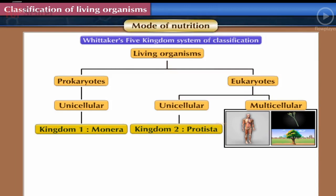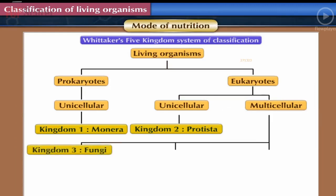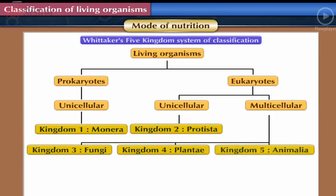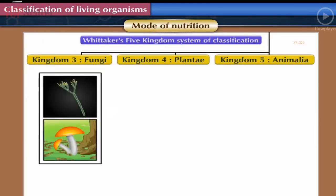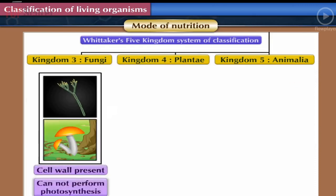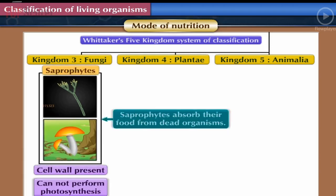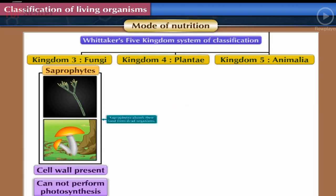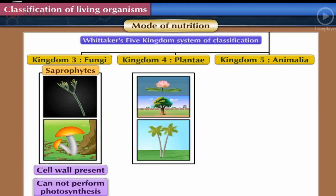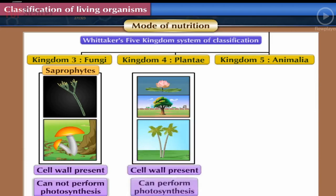Mode of Nutrition: Whittaker further classified multicellular eukaryotes on the basis of their mode of nutrition into three kingdoms. Kingdom Fungi included organisms which have a cell wall but cannot perform photosynthesis; these are called saprophytes, which absorb food from dead organisms. Kingdom Plantae included all plants that have a cell wall and can make their own food by photosynthesis — therefore called autotrophs.